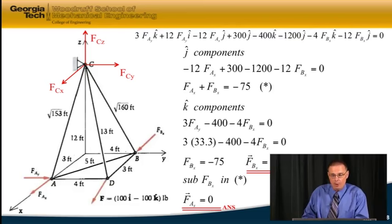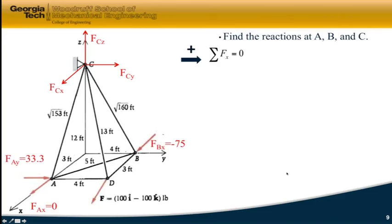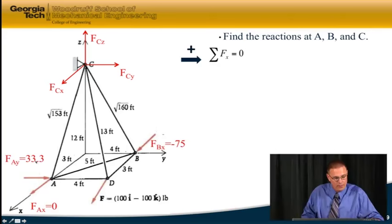Okay, here's the J and K components. You should be able to go through and check your work. You get two equations, two unknowns. You solve for F_BX is minus 75 in the I direction, and F_AX ends up being zero. And so here I've drawn those components that we came up with. I came up with 33.3 together with you. Here's the two that you came up with.